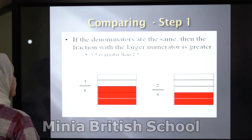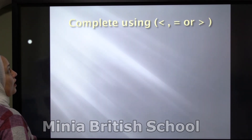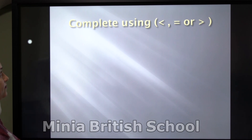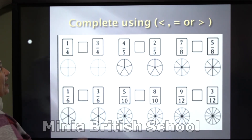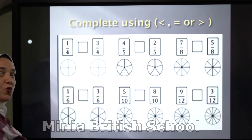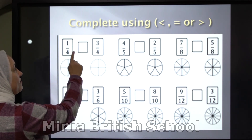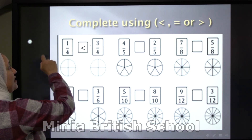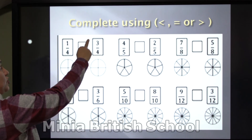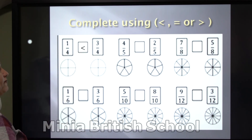Complete with me using smaller than, equal, or greater than. You have 1 over 4 and 3 over 4 — which one is bigger? The denominators are the same: it's 4. Here 3 and here 1. Yes, it's smaller than — 3 over 4 is greater than 1 over 4.